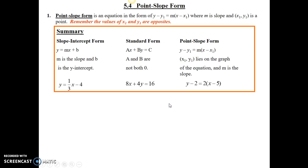To start off with, let's start with identifying some information in point-slope form. Point-slope form is an equation in the form of y minus y1 equals m times x minus x1, where m is the slope, and x1, y1 is a point. One thing to remember is the values of x1 and y1 are opposites of what they appear.